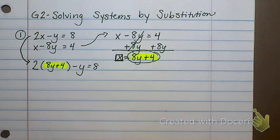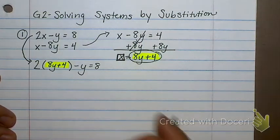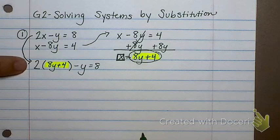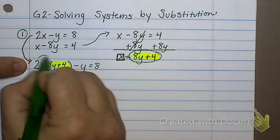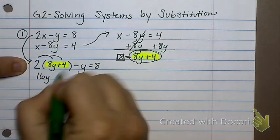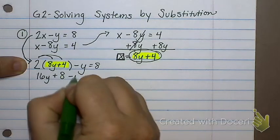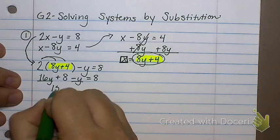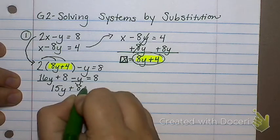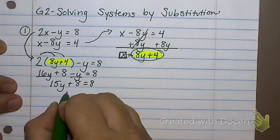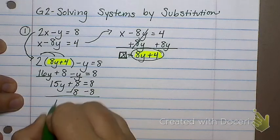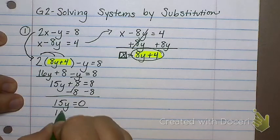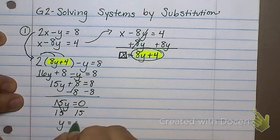At this point, I should be down to either only x's or only y's. If I still have an x and a y in my equation, then I did something wrong. Chances are I probably plugged it in for the wrong letter. So how can I solve this equation? Distribute. So 16y plus 8 minus y equals 8. And 16y and negative y are on the same side of the equals sign, so I can just add those. Gives me 15y plus 8 equals 8. Now what do I do? Subtract 8. So 15y equals 0. Divide by 15. And what does y equal? 0.